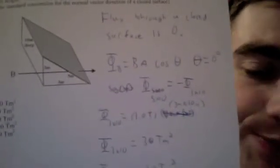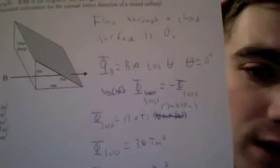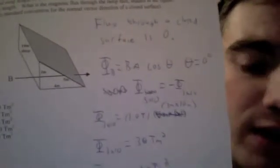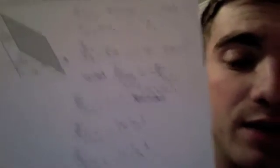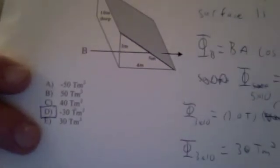And since the flux coming out of the surface is the negative of the flux coming into the surface, the flux coming out of the surface is negative 30 tesla meters squared. So that gives an answer of D.